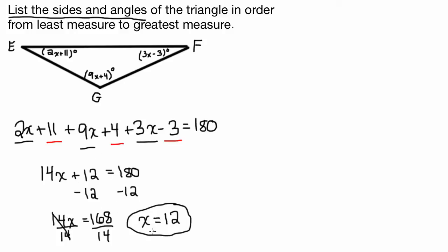So now what we need to do is we need to find the measure of each angle. So remember, we know that the measure of angle E is 2x plus 11. So we can easily substitute 12 in for x. And we know that the measure of angle E is going to be 2 times 12 plus 11, which is 24 plus 11, which is 35. So the measure of angle E is 35.